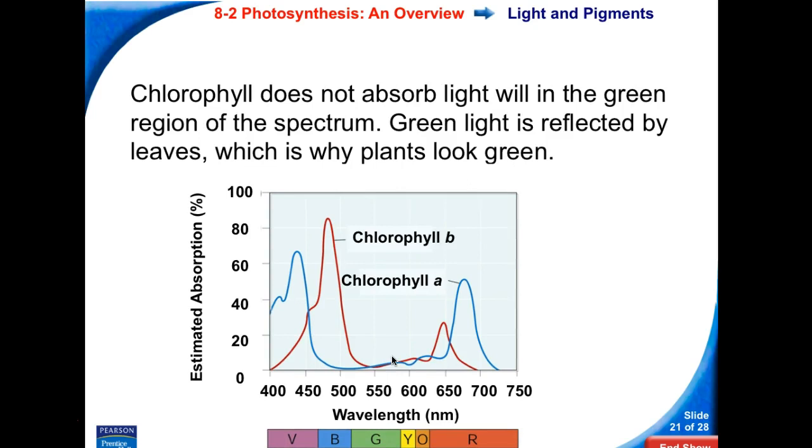Chlorophyll does not absorb light well in the green region of the spectrum. Green light is considered to be reflected by leaves. So we say green light is reflected or transmitted through the plant, which is why plants look green.